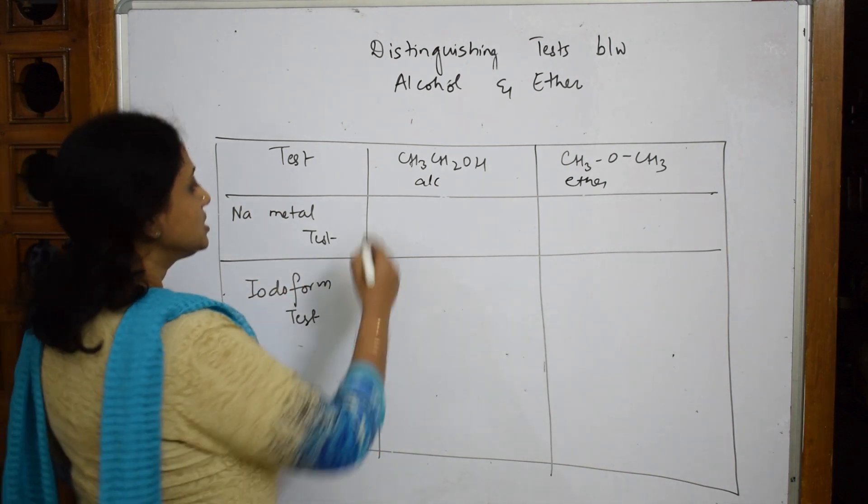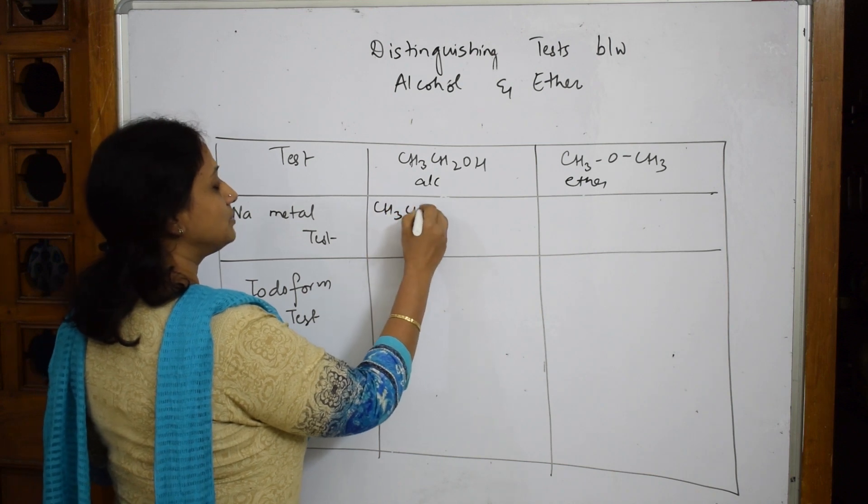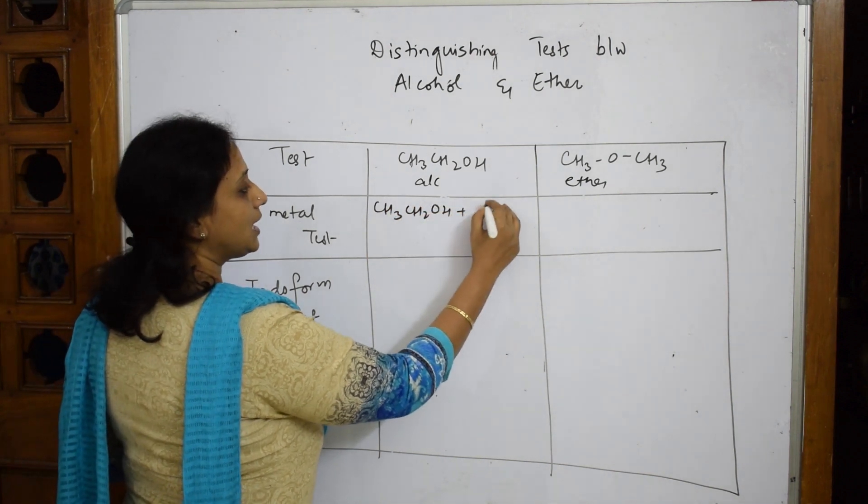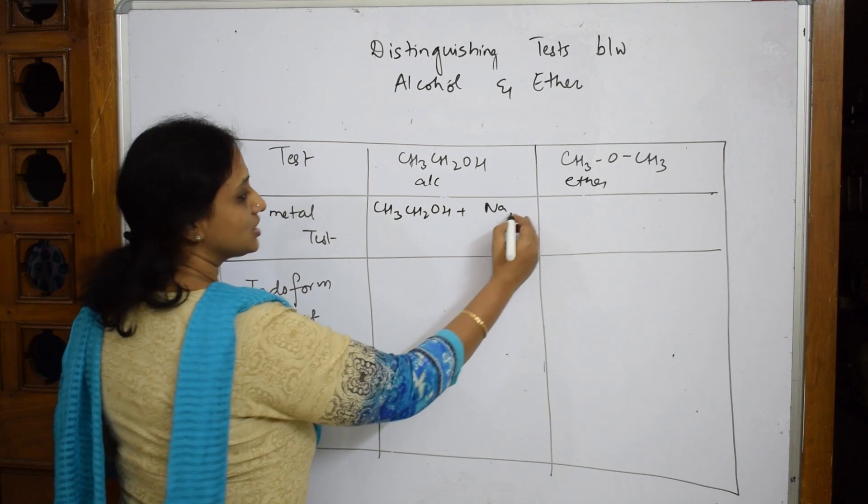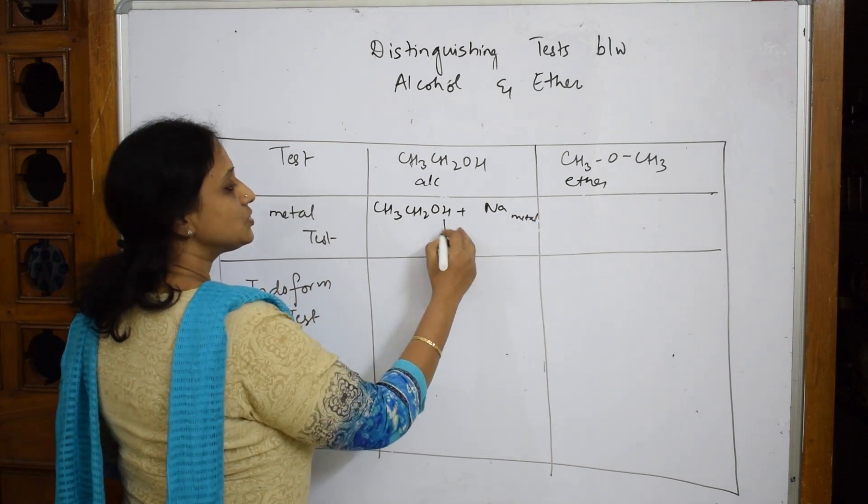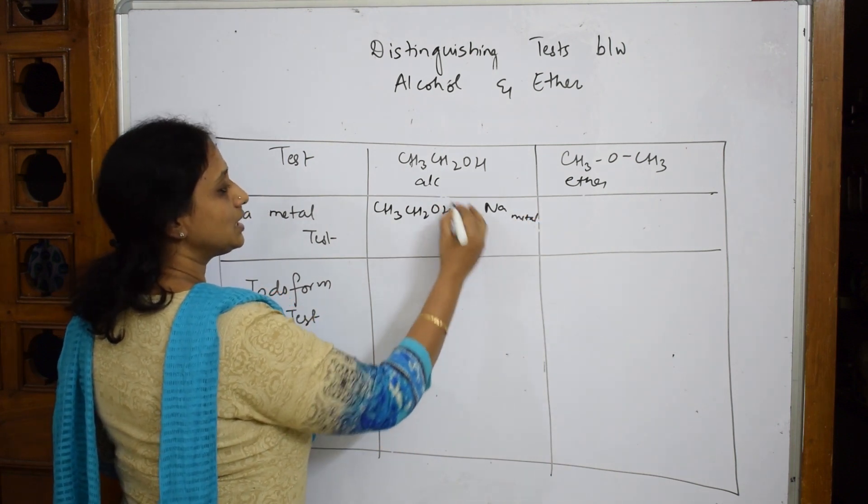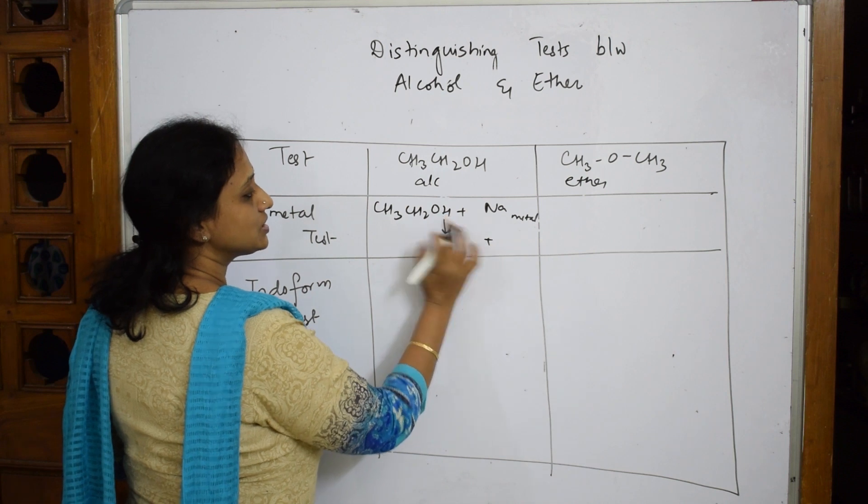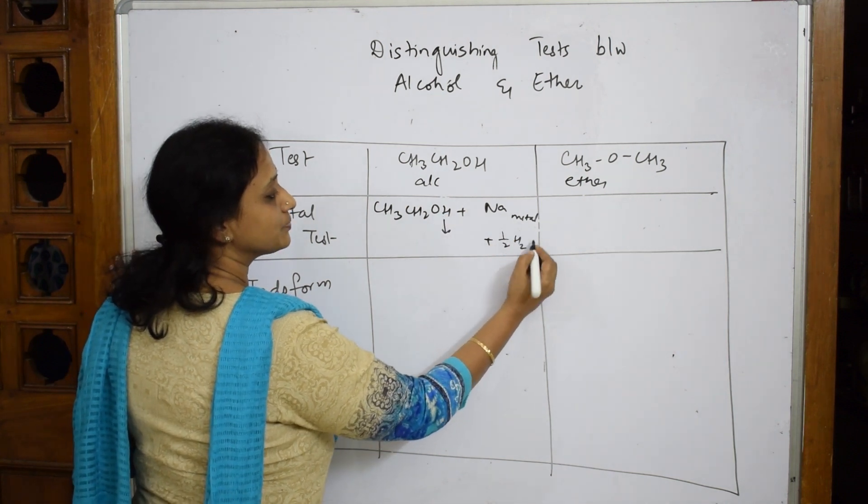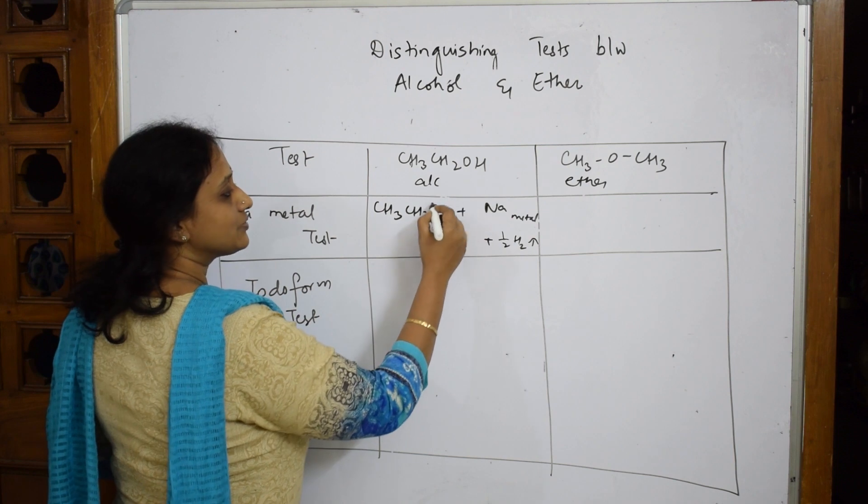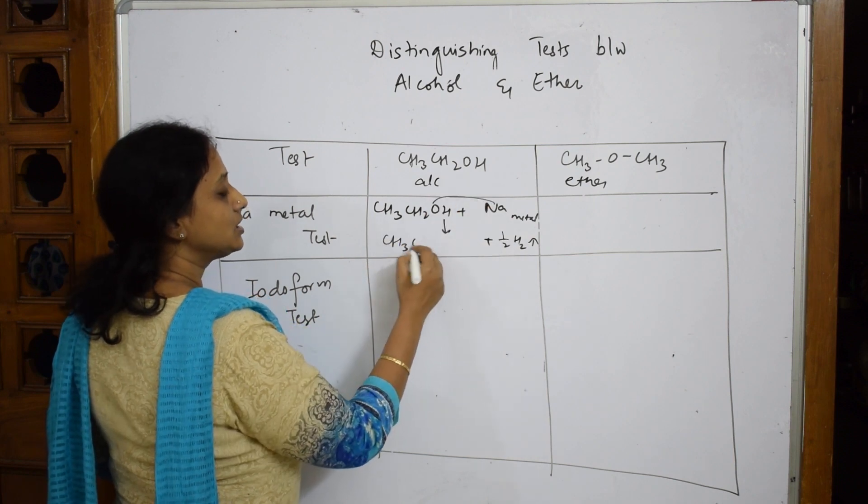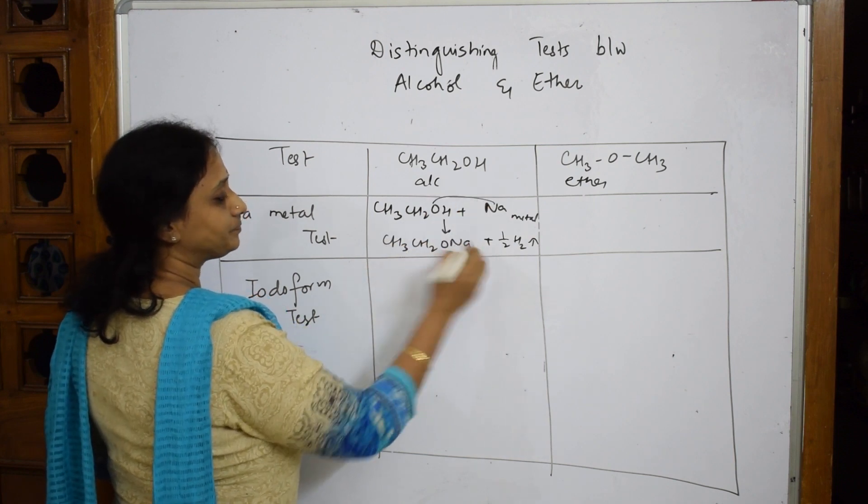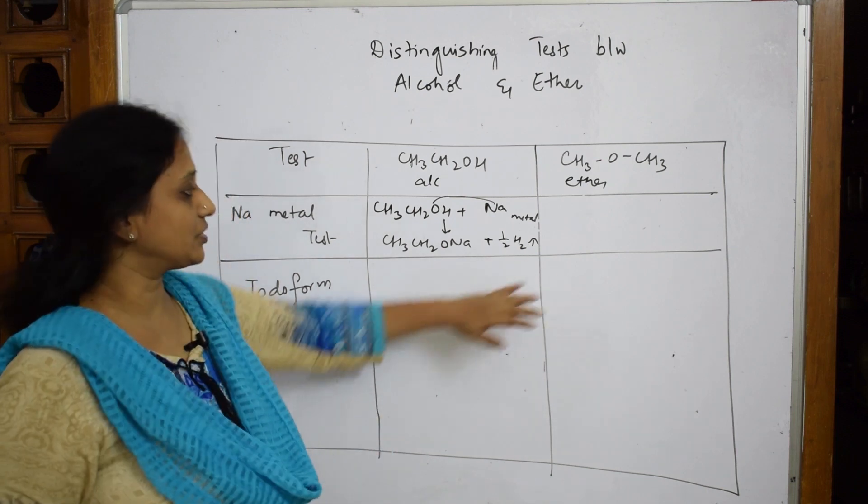The same test here: when I take ethanol alcohol, I'm going to drop in a small piece of sodium metal. Now I'm going to get hydrogen gas, half hydrogen gas comes out which pops out, and what is left out is CH3CH2ONa. This shows the presence of the release of hydrogen gas.